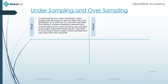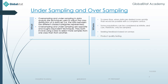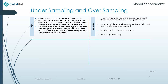Where exactly are these techniques used and why? To save time when data are desired more quickly than would be possible with a complete census. Some populations can be considered infinite, and hence it is only sampling which can be used. Next is seeking feedback based on surveys.